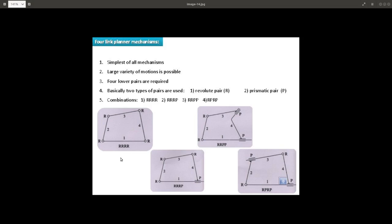If you see in this mechanism we have replaced one of the R pair into a sliding pair. That has been represented as RRRP.